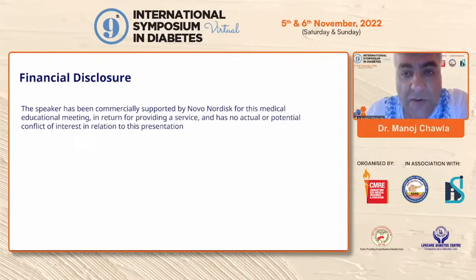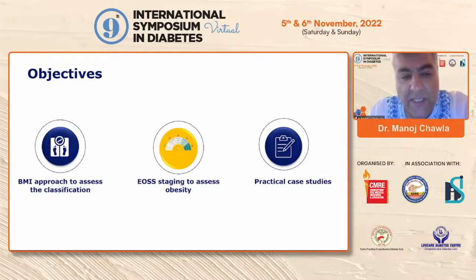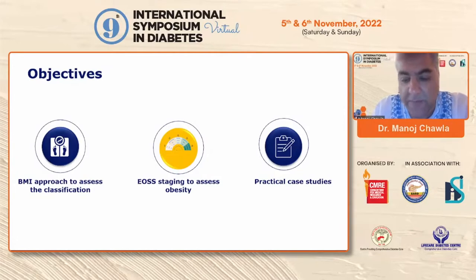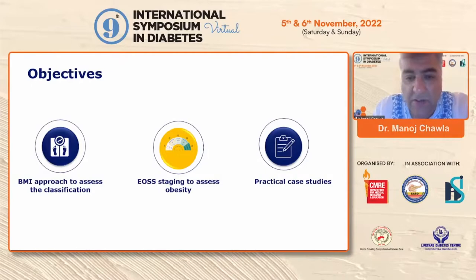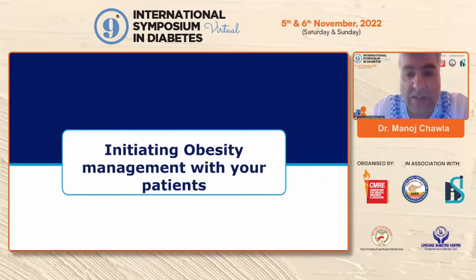Today we understand that we need to go beyond just BMI as a means of assessing obesity. The objective is to understand the BMI approach to assess classification — that's just based on your BMI, how we've been doing it so far, classifying people as normal weight, overweight, and grades of obesity. Then let's look at the EOSS — the Edmonton Obesity Staging System — and some practical case studies to understand how this newer means of classifying an individual as obese differs from the earlier BMI-based means.